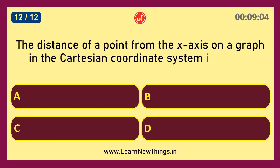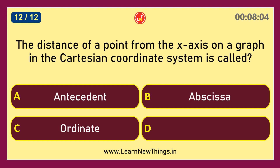The distance of a point from the x-axis on a graph in the Cartesian coordinate system is called the Ordinate.